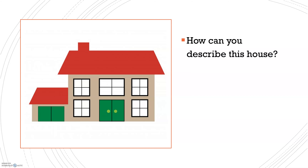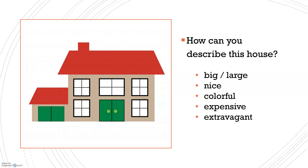How can you describe this house? We can describe the house in many different ways. We can describe the size — it's big, it's large. It's nice, it's colorful, which means many different colors. It's expensive — that would be the price. It's extravagant, that's a more advanced word, but it means it's extremely nice. It's great, and there are many different ways to describe the house.